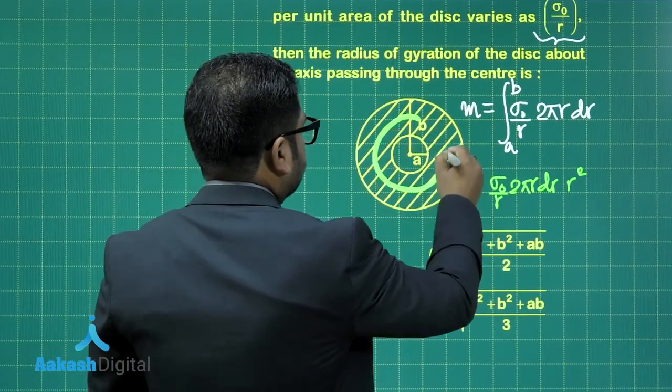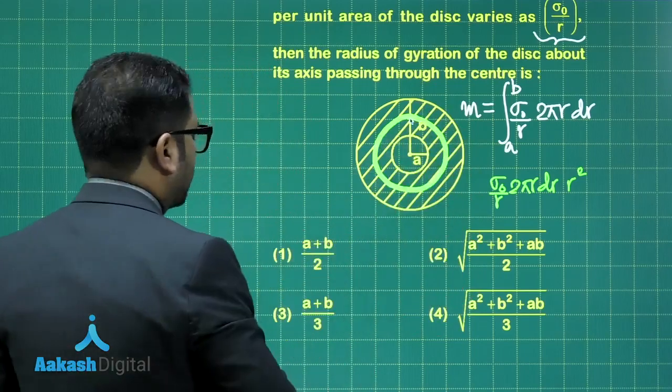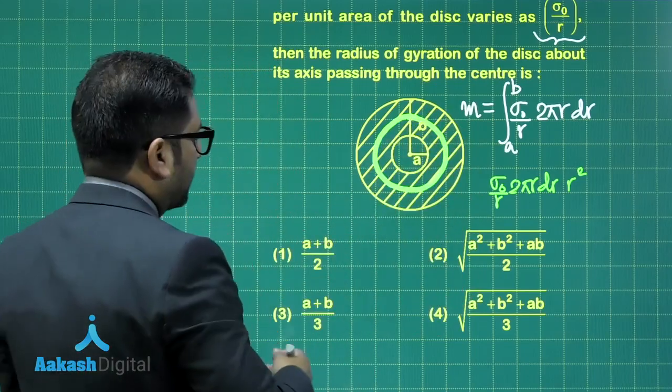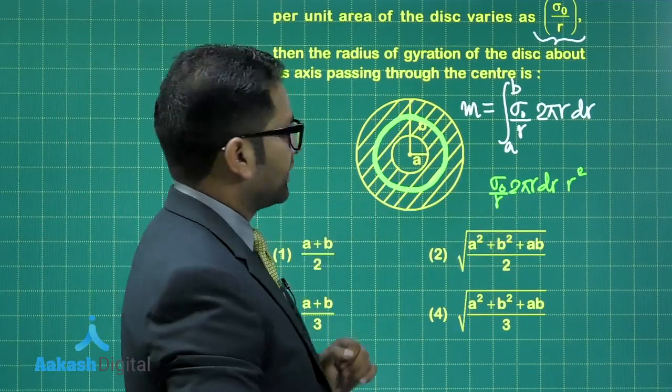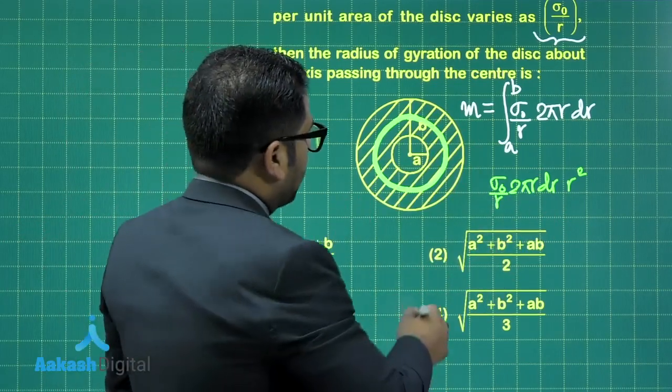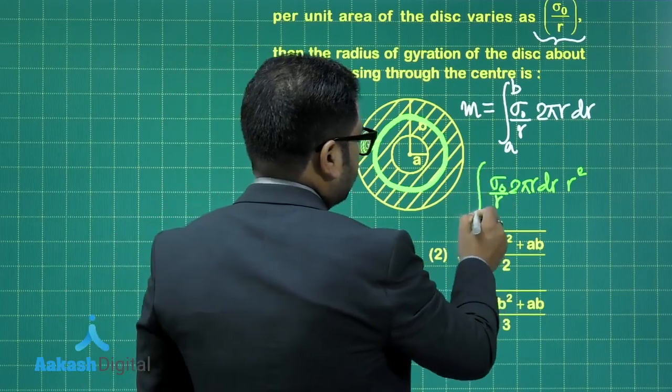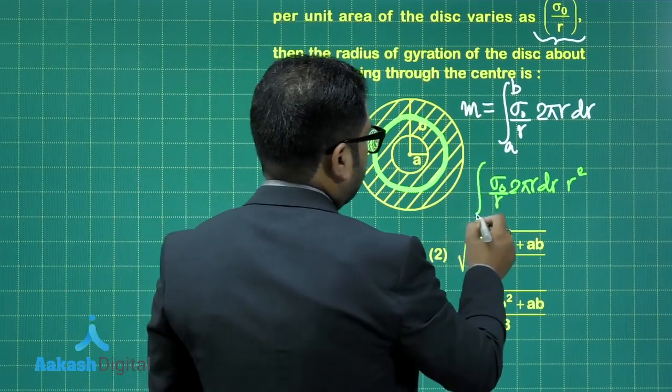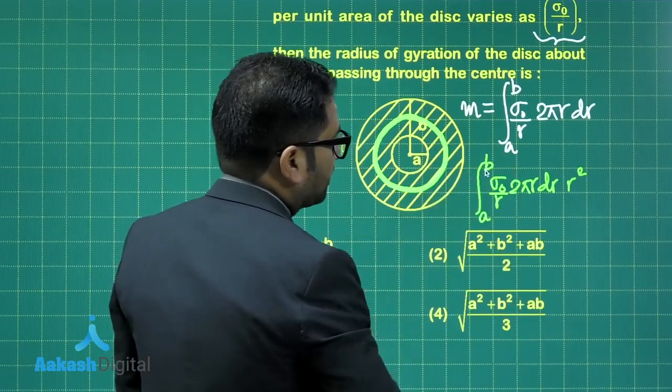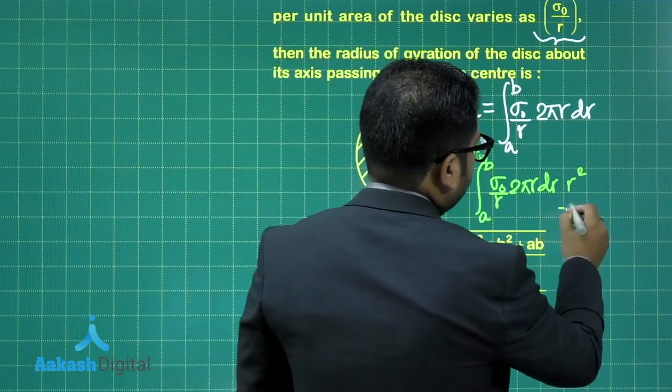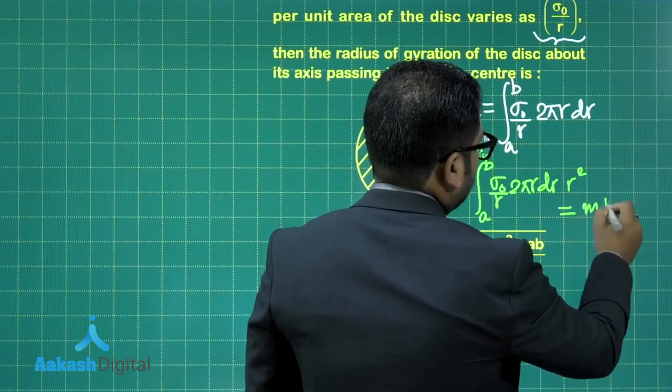So here, that's the ring, the radius is r, the thickness is dr, and mass is this much multiplied by r square is the moment of inertia. And I need to integrate it, the limit would be from A to B. So that will give me the moment of inertia. And this would be equated to m k square.